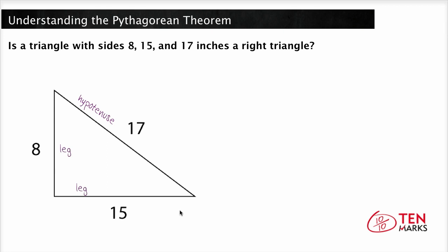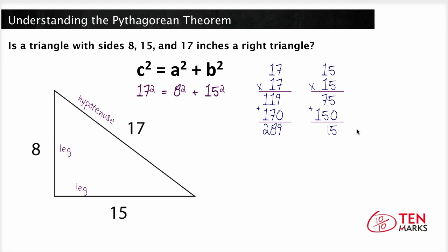So let's see if these side lengths fit into the Pythagorean Theorem. Let's plug in these values into c, a, and b. We get 17 squared equals 8 squared plus 15 squared. So 17 squared is 289. We do the same thing again with 15 squared, and we get 225. So 289 equals 8 squared, 64, plus 225.